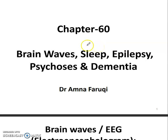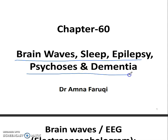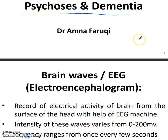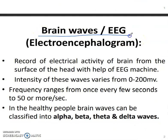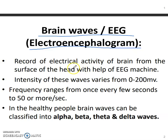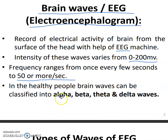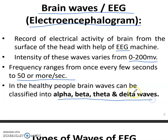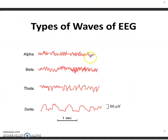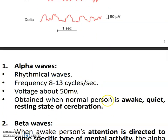Hello and good morning. Today our topic will be brain waves, sleep, epilepsy, psychosis, and dementia. It is from the guide in chapter 60. The brain waves — EEG, electroencephalogram — records electrical activity of the brain. The frequency is 50 or more per second and they are divided into alpha, beta, theta, and delta waves.